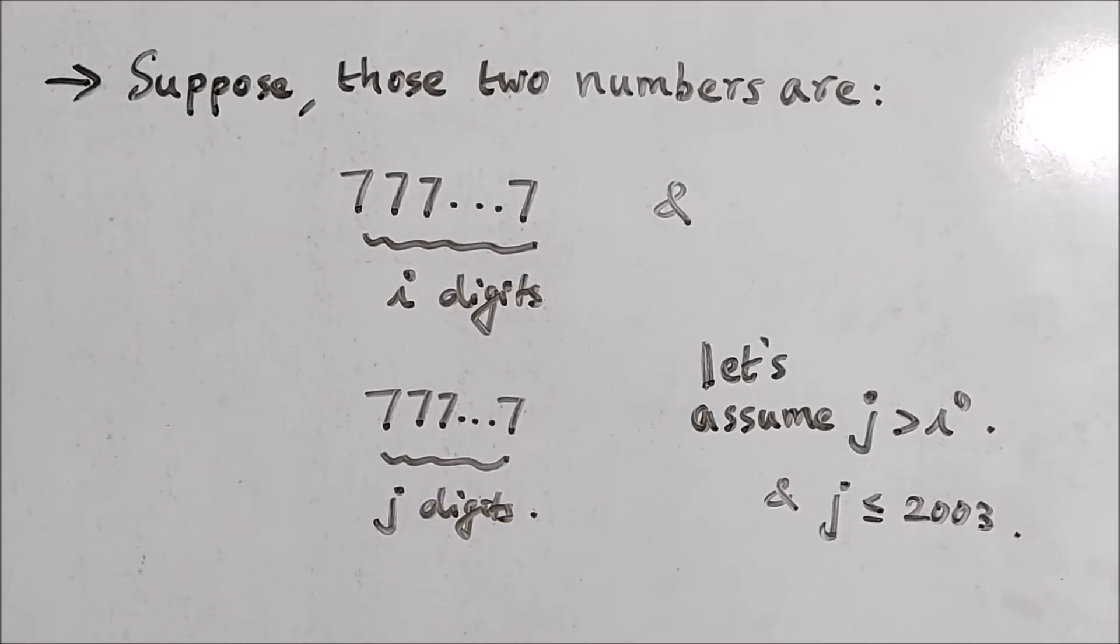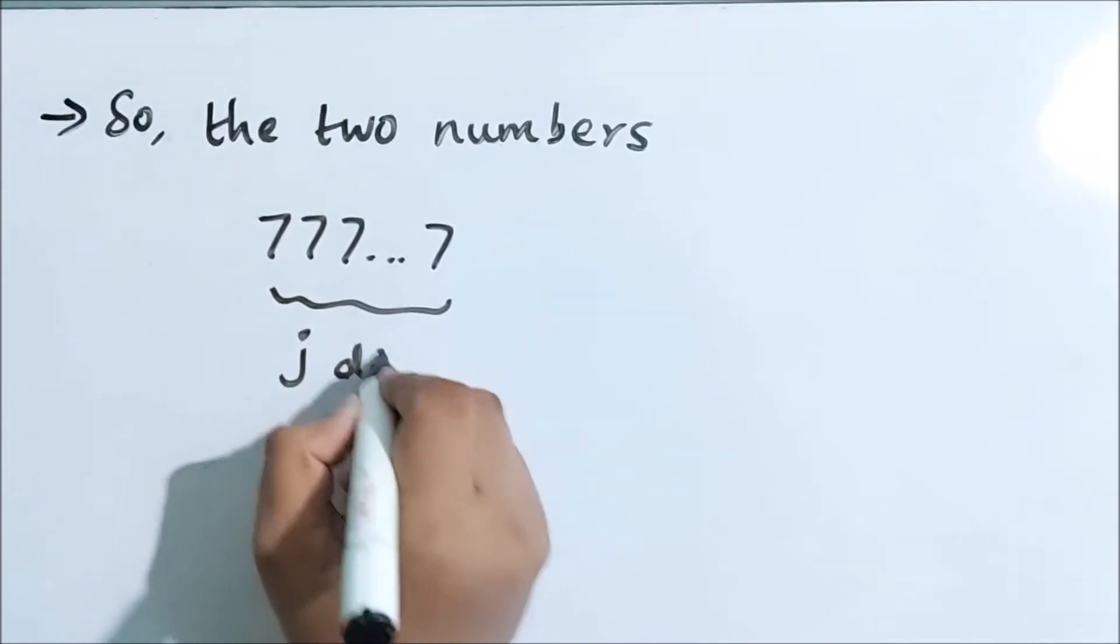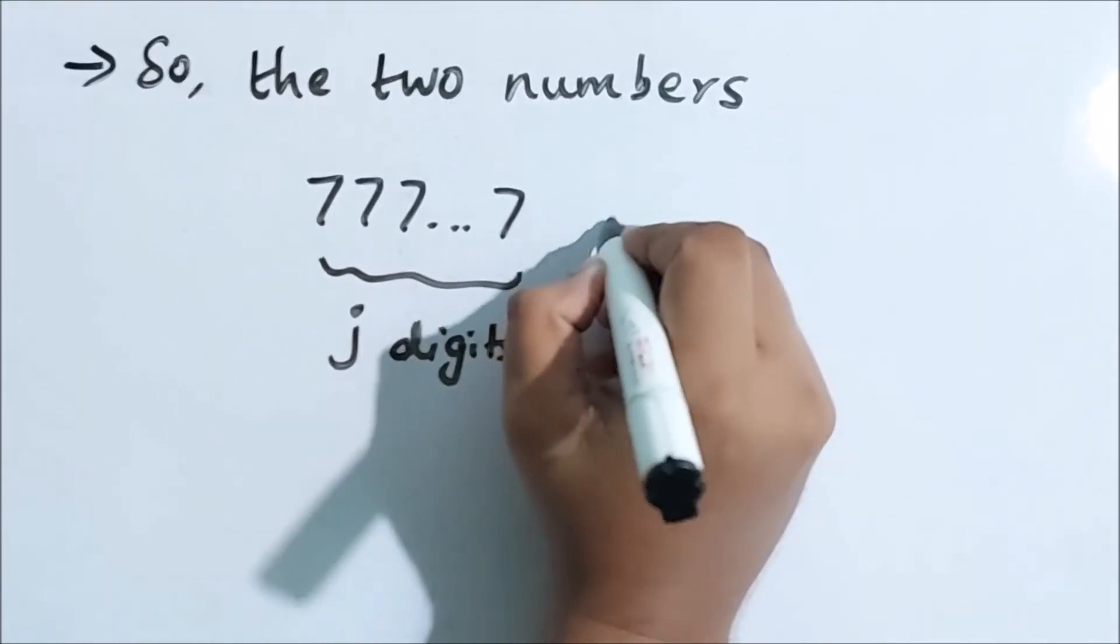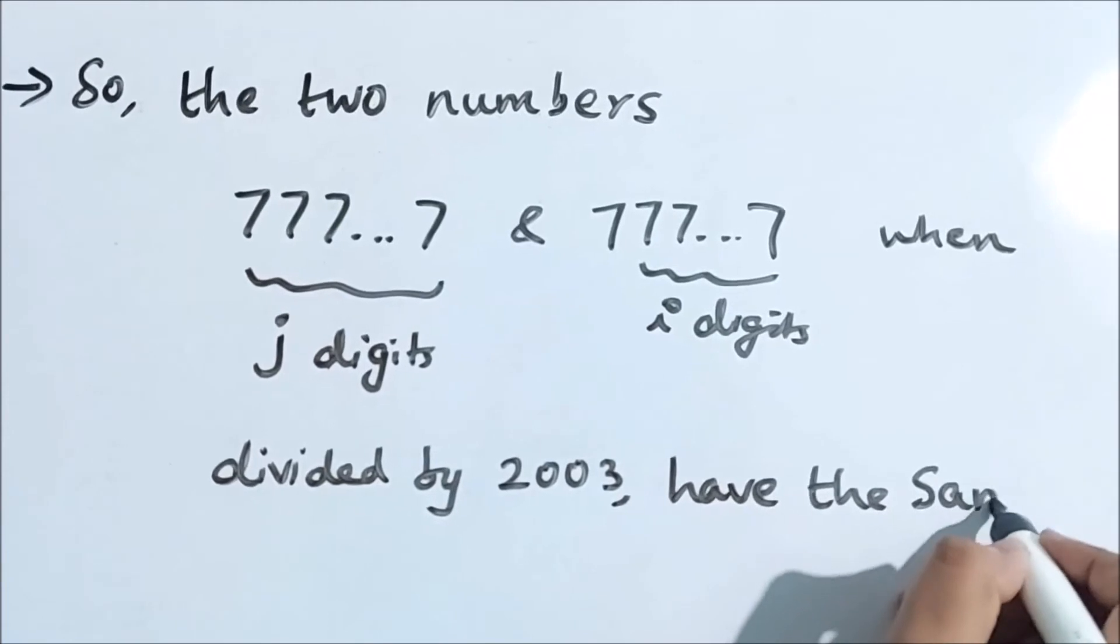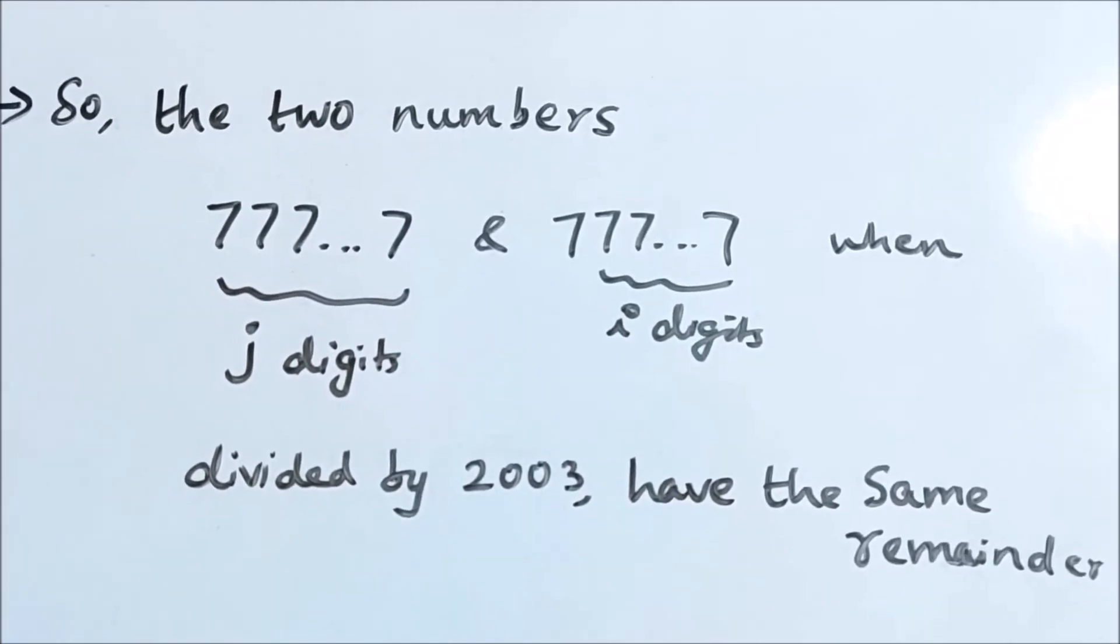So these two numbers, 777...7 with j digits of 7 and 777...7 with i digits of 7, when divided by 2003, they have the same remainder.